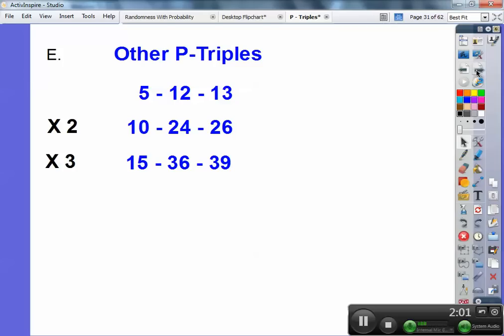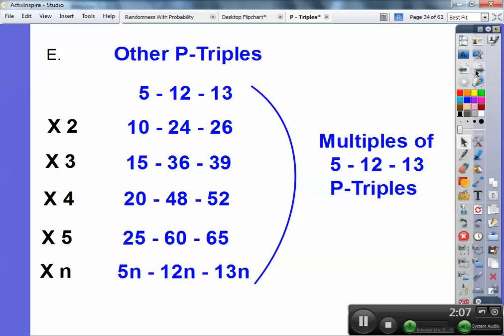So here it is times 3, another P-triple, times 4, another P-triple, times 5, times n. These are multiples of 5, 12, 13 P-triples.